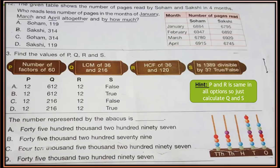Question 12: The given table shows the number of pages read by Soham and Sakshi in 4 months. Who read fewer pages in the months of January, March and April altogether, and by how much? See the table showing pages read in January, February, March and April. Calculate the total pages read by each in January, March and April, then find who read less and by how much.